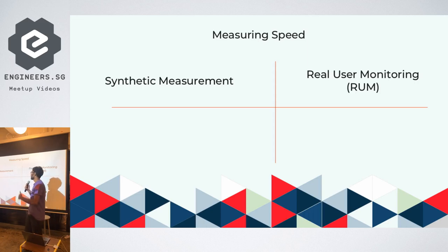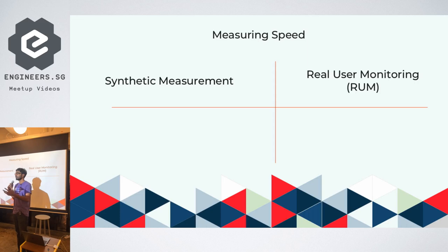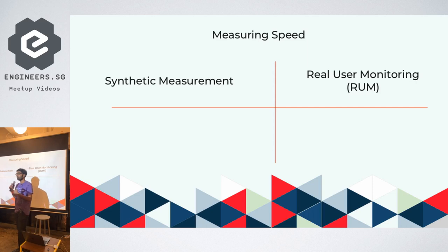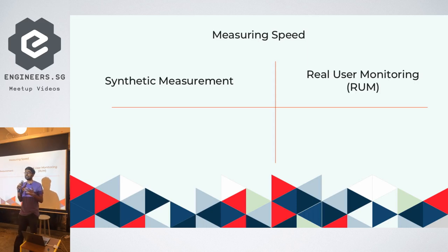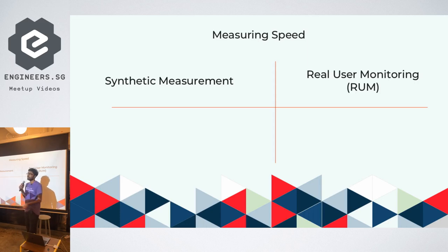The second way of measuring performance is called Real User Monitoring (RUM). Compared to synthetic measurement, this uses live performance data from your actual users to find bottlenecks. It's more representative of what your users actually experience. Both approaches have use cases: synthetic monitoring can prevent performance regressions in a CI/CD pipeline, while RUM can catch bugs that only occur in specific browsers like Samsung Browser.